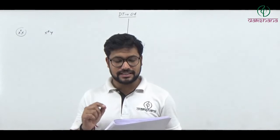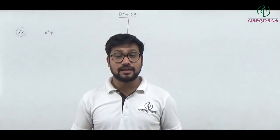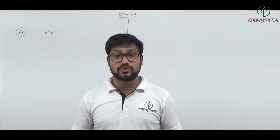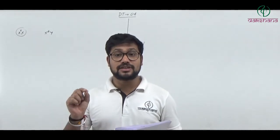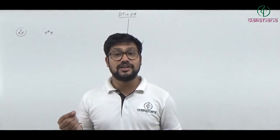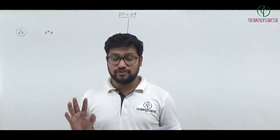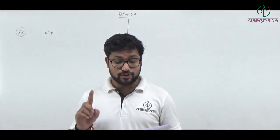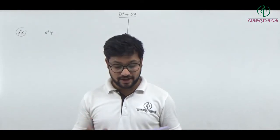Question number sixty-five: Orbicules are produced in what? Orbicule bodies are produced by the tapetum. Orbicule bodies are involved in the formation of sporopollenin. Question number sixty-five's fourth option is the right answer.